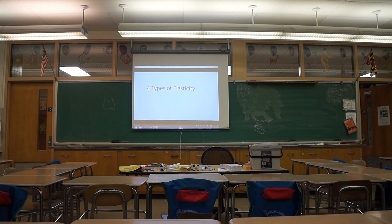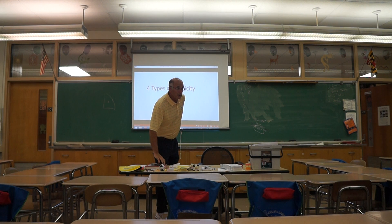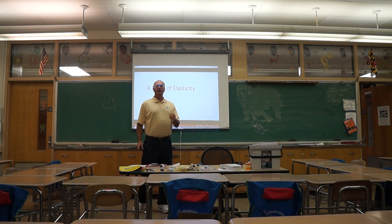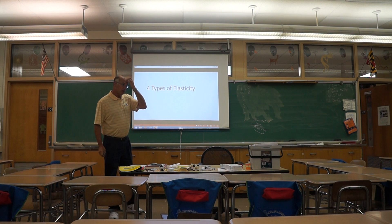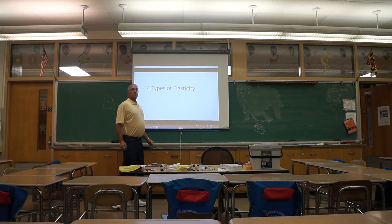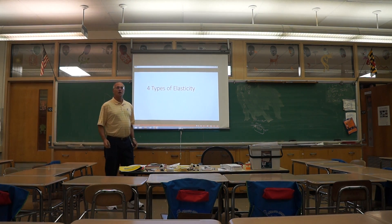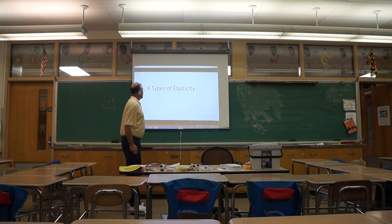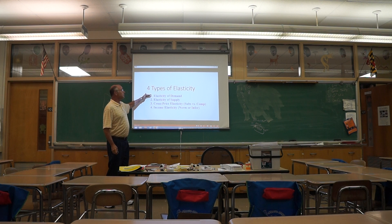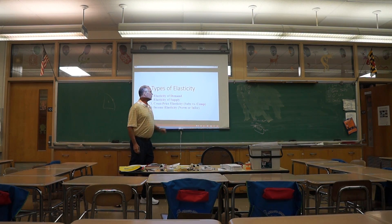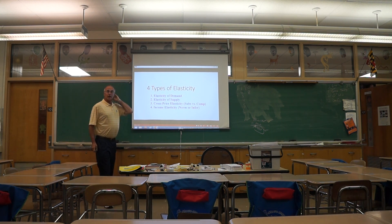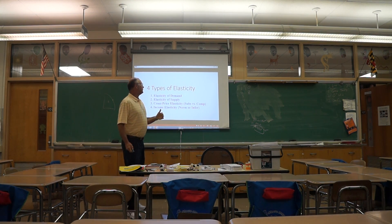Today we're going to talk about four types of elasticity. Elasticity is a growing topic on the AP exam — usually about six questions out of 60, so about 10%. The four types of elasticity are elasticity of demand and supply, cross-price elasticity (which tells you if a good is a substitute or a complement), and income elasticity (which tells you if a good is normal or inferior).